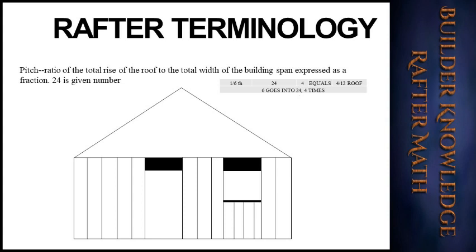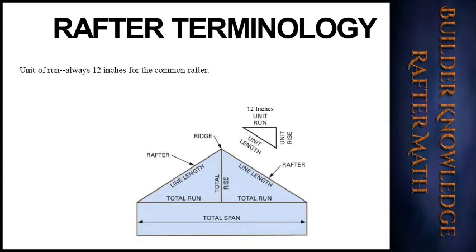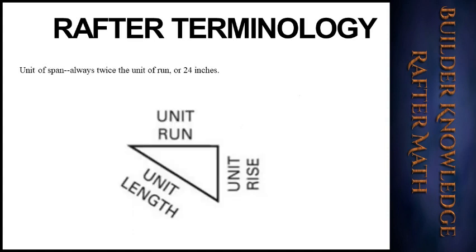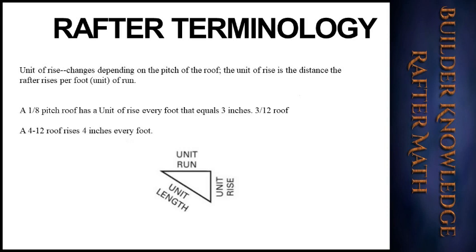The unit of run is always the same for common rafters — always 12 inches. The difference comes with hip and valley rafters: they are 16.97 on a builder's square and 17 in industry. The unit of span is always twice the unit of run, or 24 inches — when you have a total span and total run, the span is twice the amount of the run. The unit of rise changes depending on the pitch. A 1/8 pitch roof has a unit of rise of 3 inches per foot (a 3/12 roof); a 4/12 roof rises 4 inches every foot.